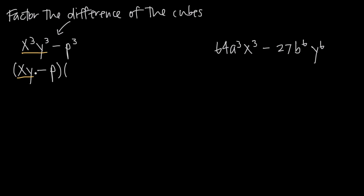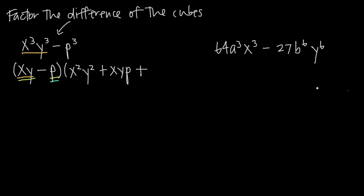Then we're going to multiply this by a trinomial — a polynomial with three terms. The first term is always whatever we have to multiply by the first term of the binomial to get back to the original first term. So what do we have to multiply by xy to get x cubed y cubed? That's just x squared y squared. Then we always add — this is always a positive sign as part of our formula. The middle term is these two binomial terms multiplied together: xy times p gives us xyp. Then we always add again, and take the last term, p, squared to get p squared.